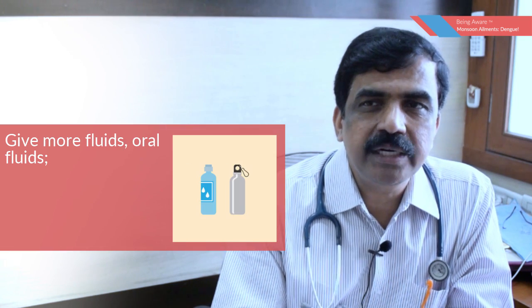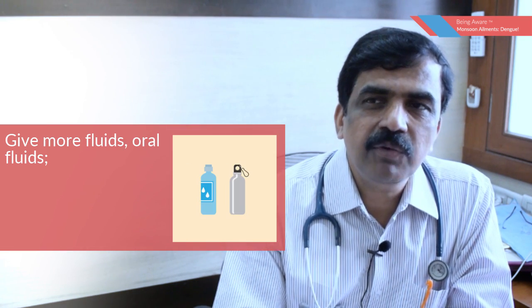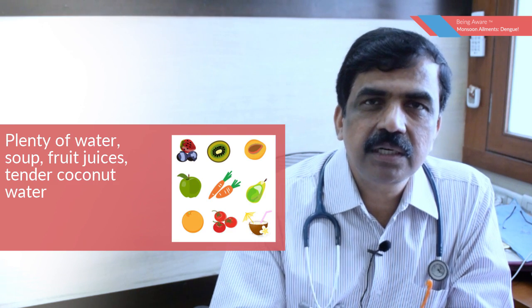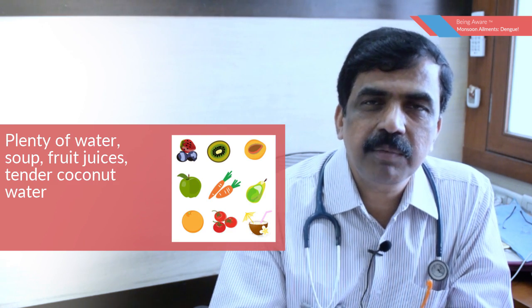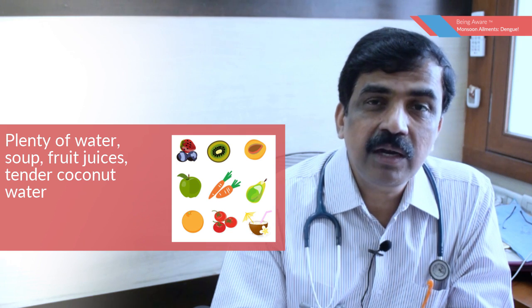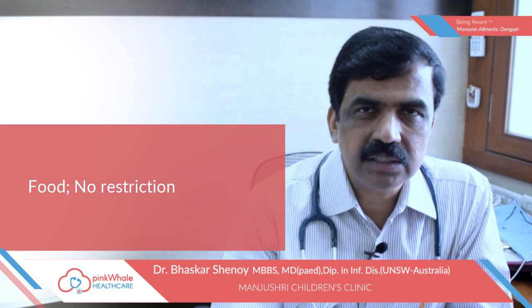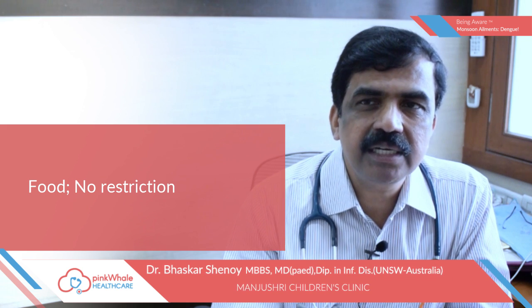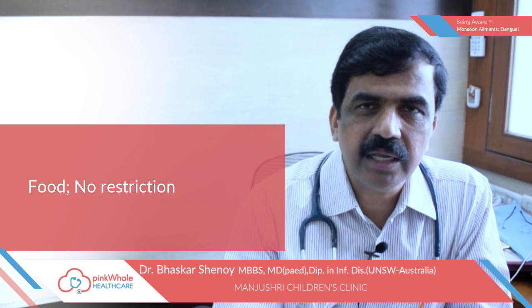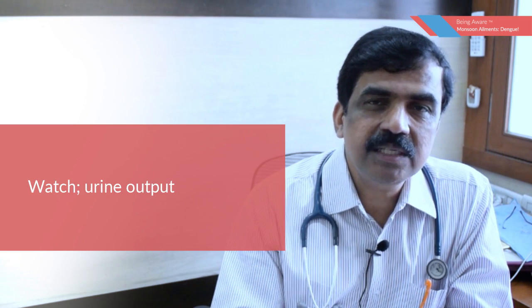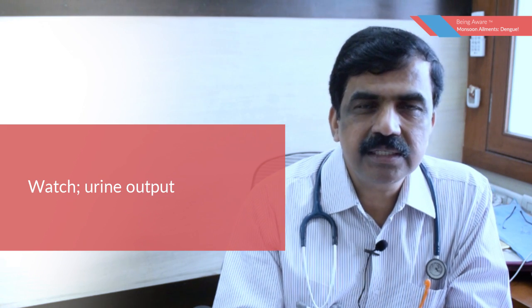Give more fluids. If the child is taking orally, give plenty of oral fluids — it can be soups, fruit juices, tender coconut water, or plain water. Allow the child to drink more water. Food-wise, there are no restrictions; whatever normal food the child is able to take, you can give. But fluid is most important. Keep a watch on the urine output — if the child is passing adequate urine, that means the fluid intake is appropriate.